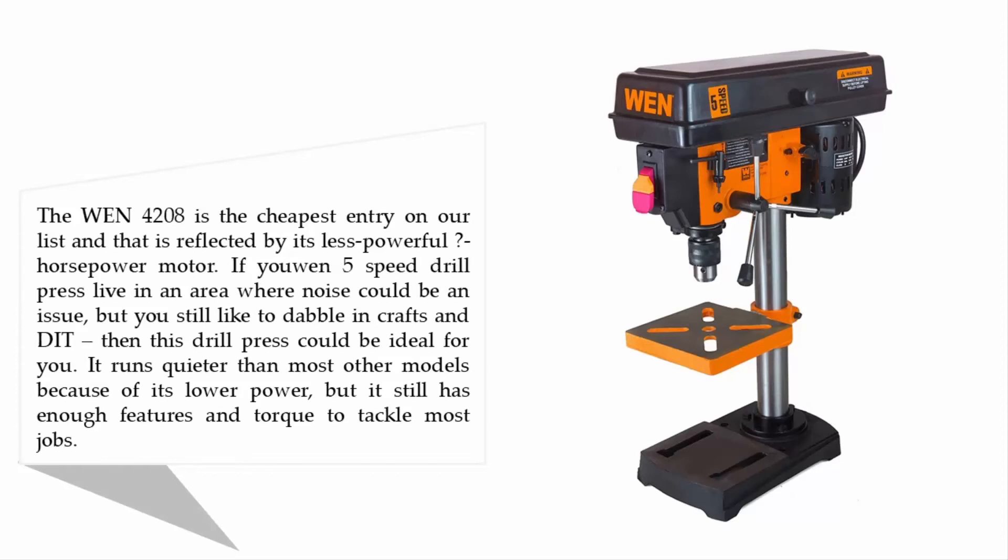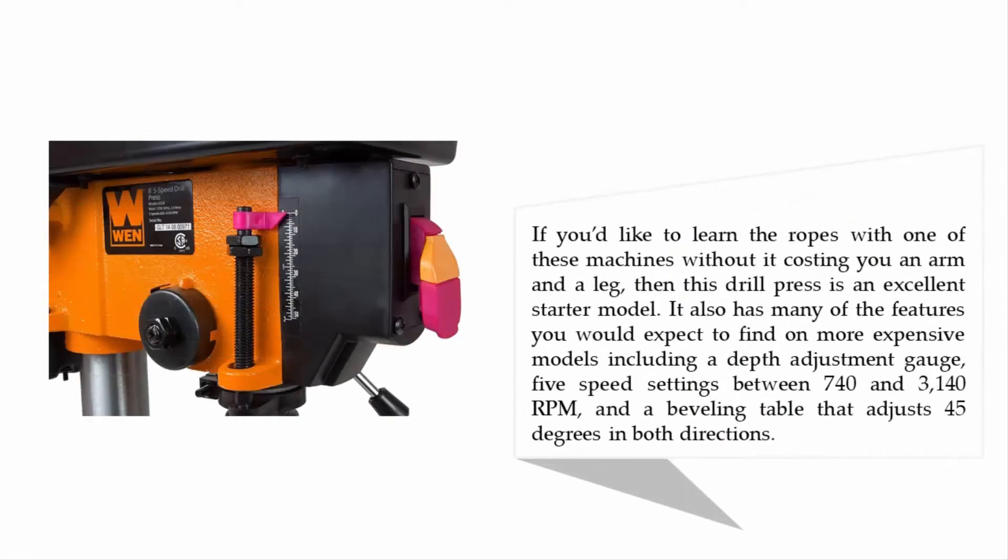If you'd like to learn the ropes with one of these machines without it costing you an arm and a leg, then this drill press is an excellent starter model. It also has many of the features you would expect to find on more expensive models, including a depth adjustment gauge, five speed settings between 740 and 3140 RPM, and a beveling table that adjusts 45 degrees in both directions.